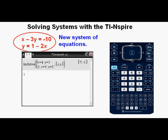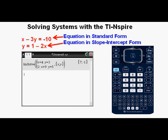Now let's look at this system, x minus 3y equals negative 10, and y equals 1 minus 2x. The curious thing about this system is that one equation is in standard form, and the other equation is in slope-intercept form. If we were using a TI-84 to solve this system, we would either have to convert forms or use matrices. But let's see how it's a whole lot easier with the TI-Nspire calculator.